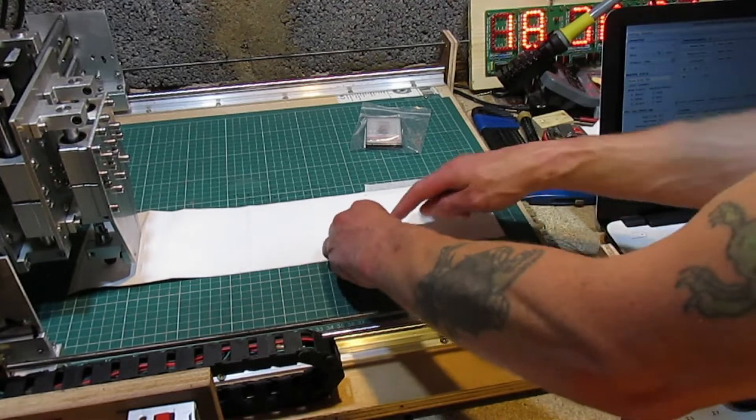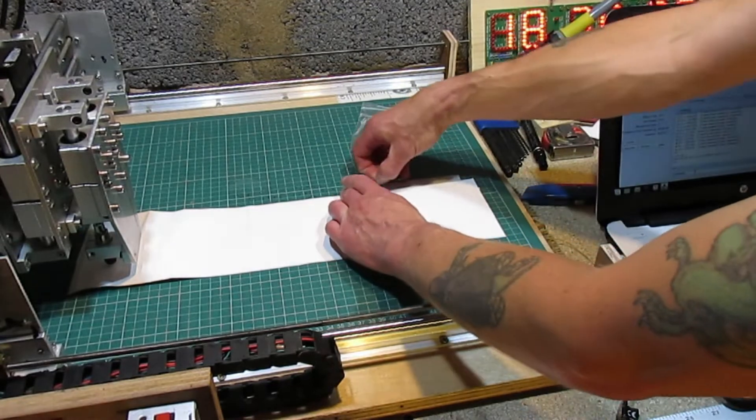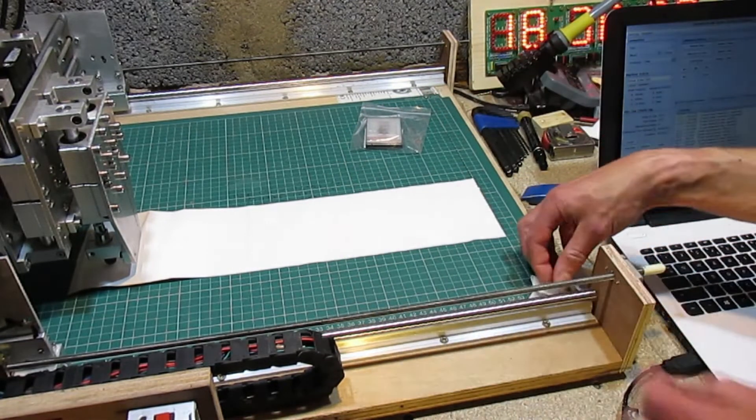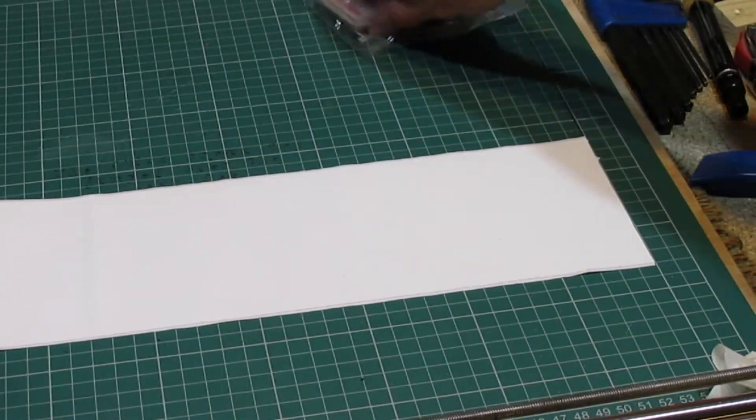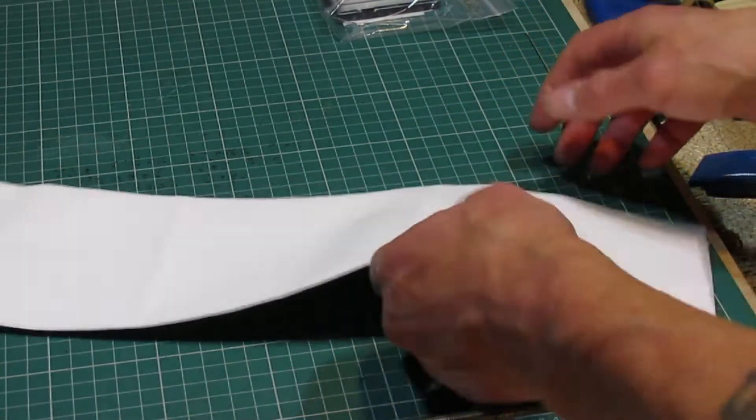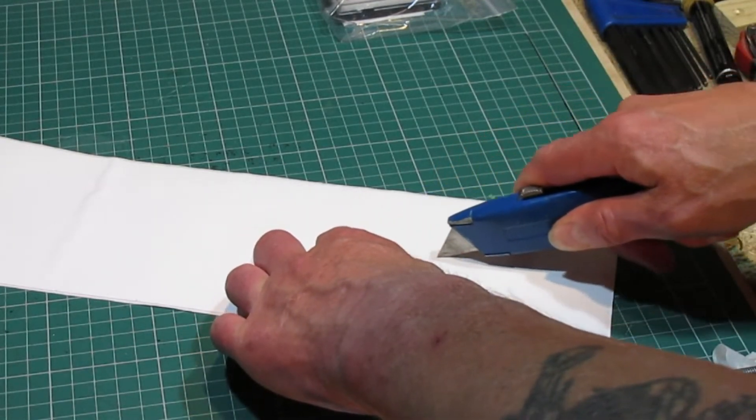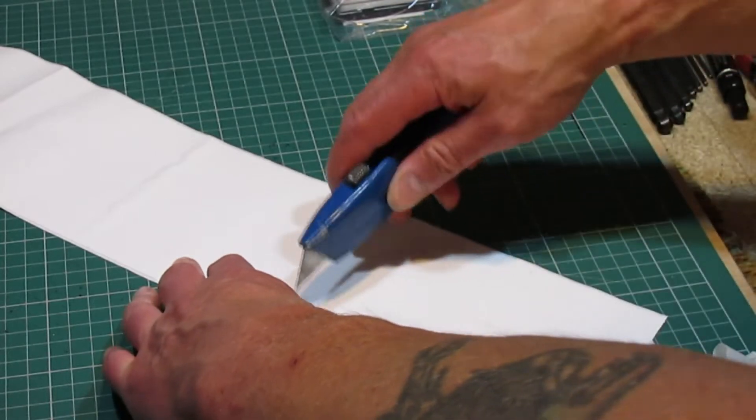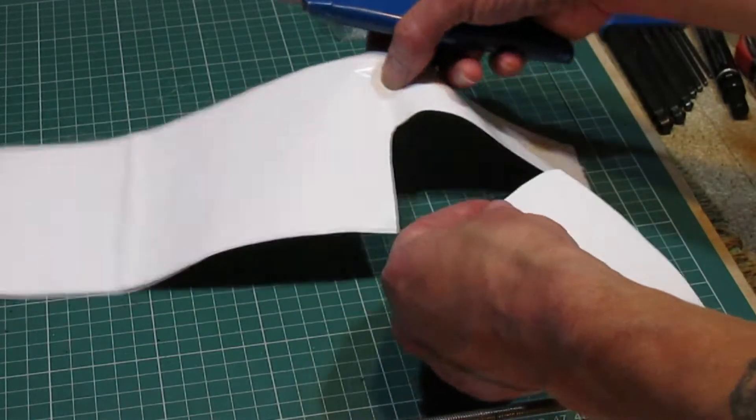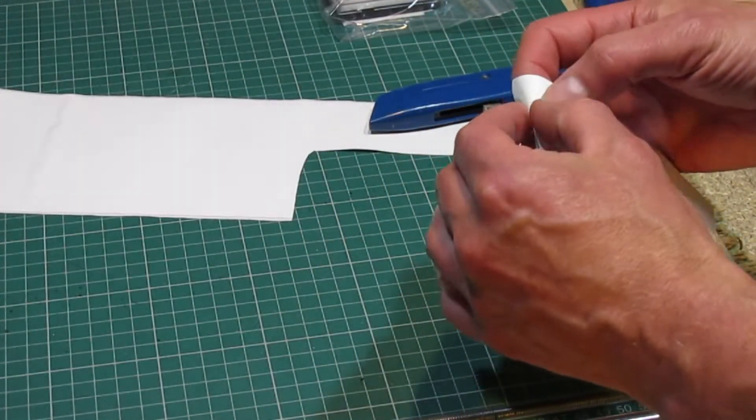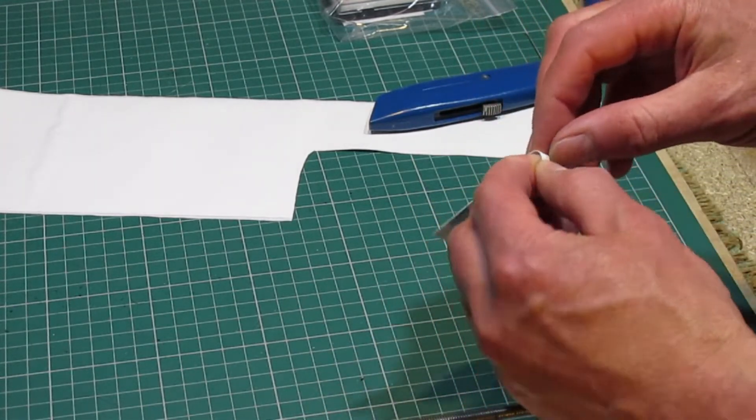Now it's finished, let's see what it has produced. Cut out the bit we want using a sharp knife, and peel off the waste vinyl which we don't want, leaving only the vinyl that we do.